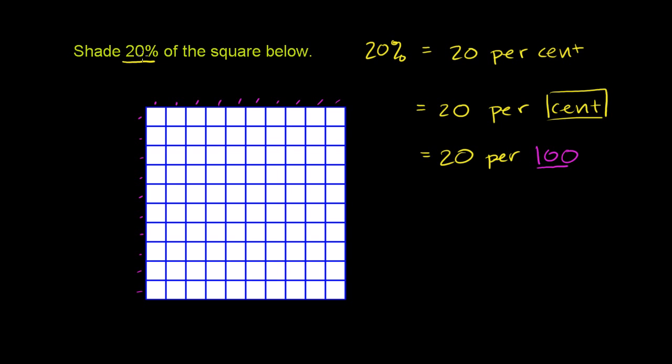So if we want to shade 20 percent of that, we need to shade 20 of every 100 squares. In this case, we'll just literally shade in 20 squares.